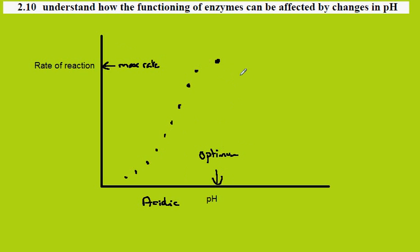If we repeat the experiment with the enzyme-catalyzed reaction at higher pHs, the same occurs. The rate gradually decreases up towards these higher pHs — more alkaline conditions.